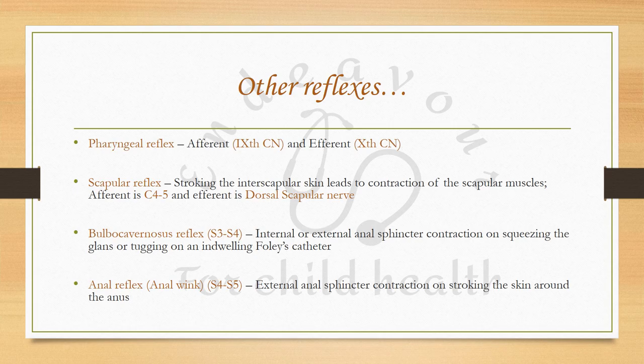The bulbocavernous reflex checks the integrity of sacral segments S3 and S4, and it is the contraction of the internal or external anal sphincter on squeezing the glans or tugging on an indwelling Foley's catheter. The anal reflex, also referred to as the perianal reflex or anal wink, checks for integrity of the sacral segments S4 and S5, and comprises external anal sphincter contraction on stroking the skin around the anus.